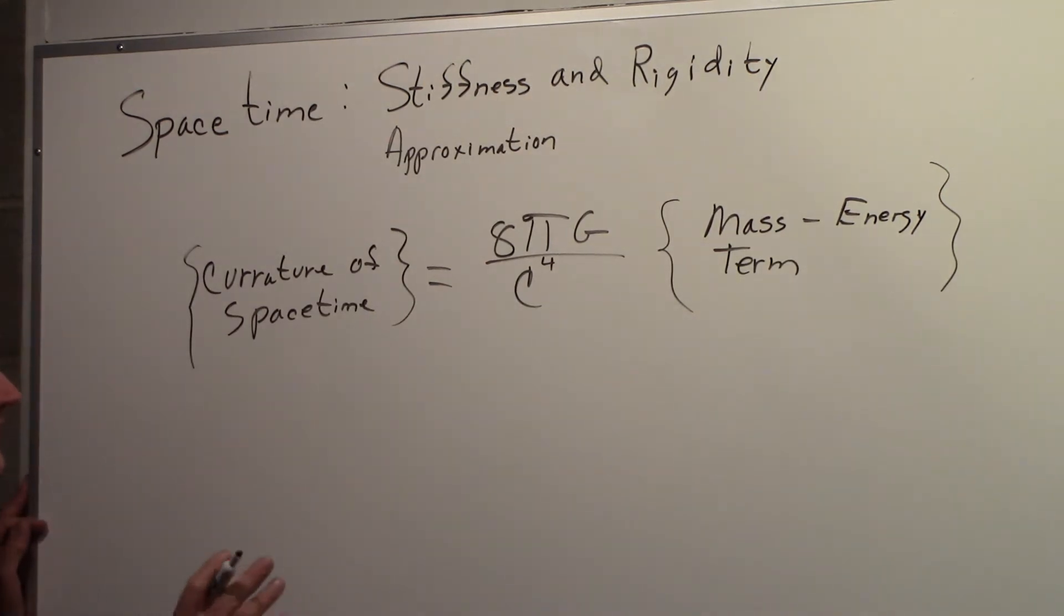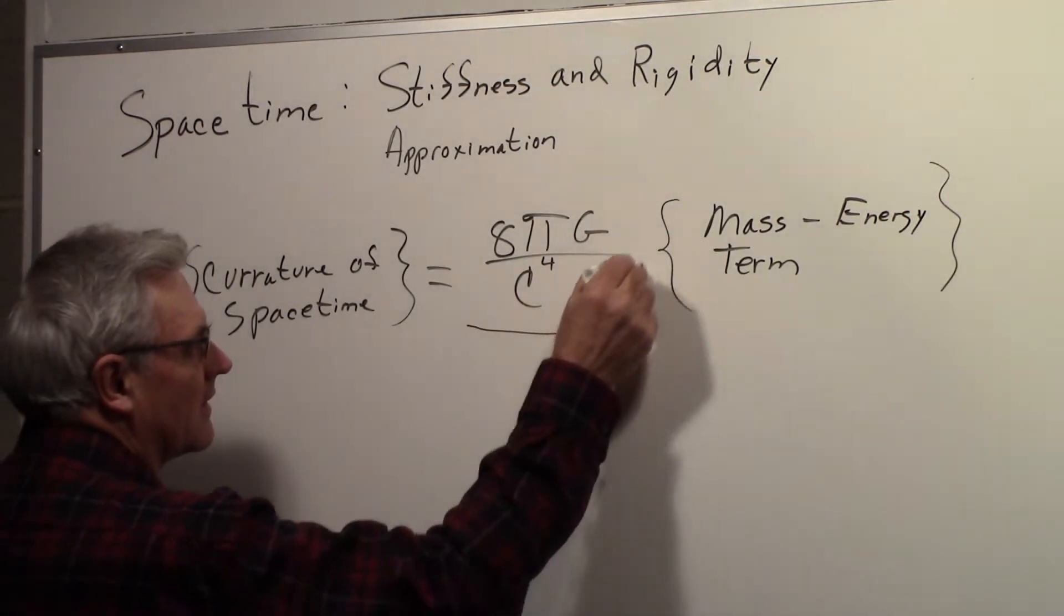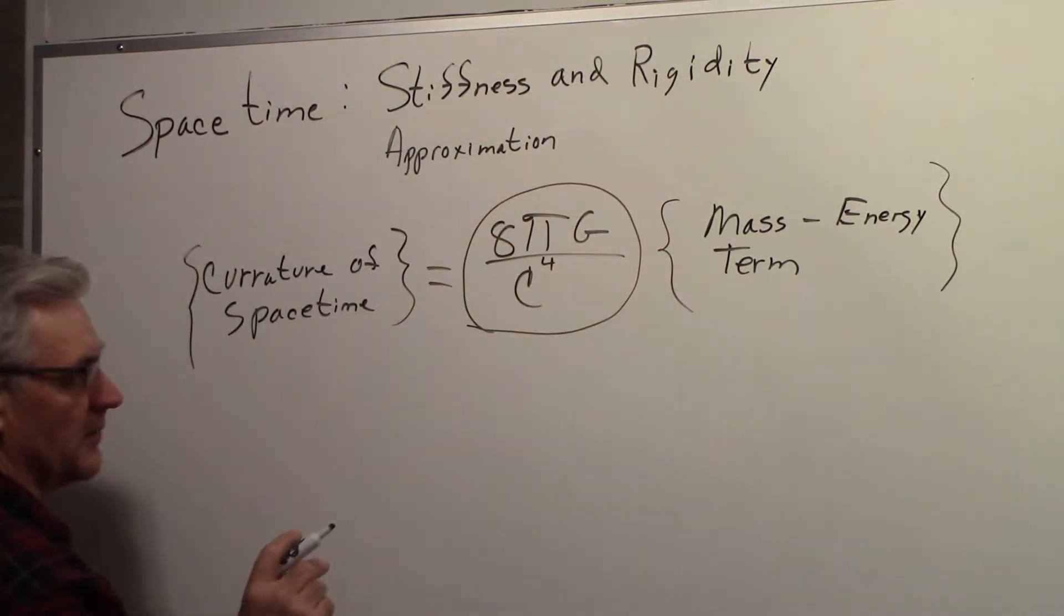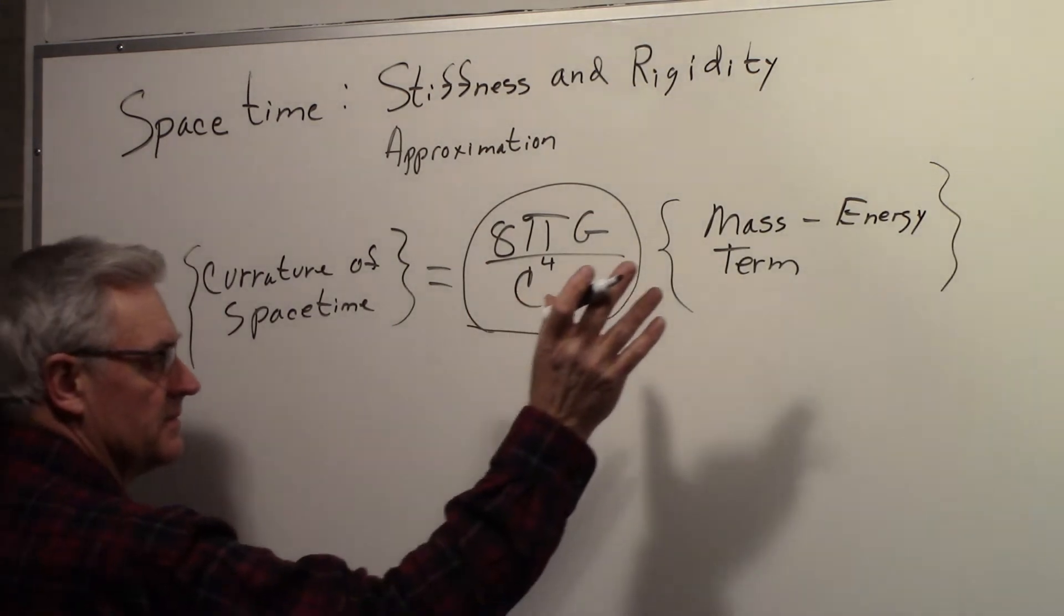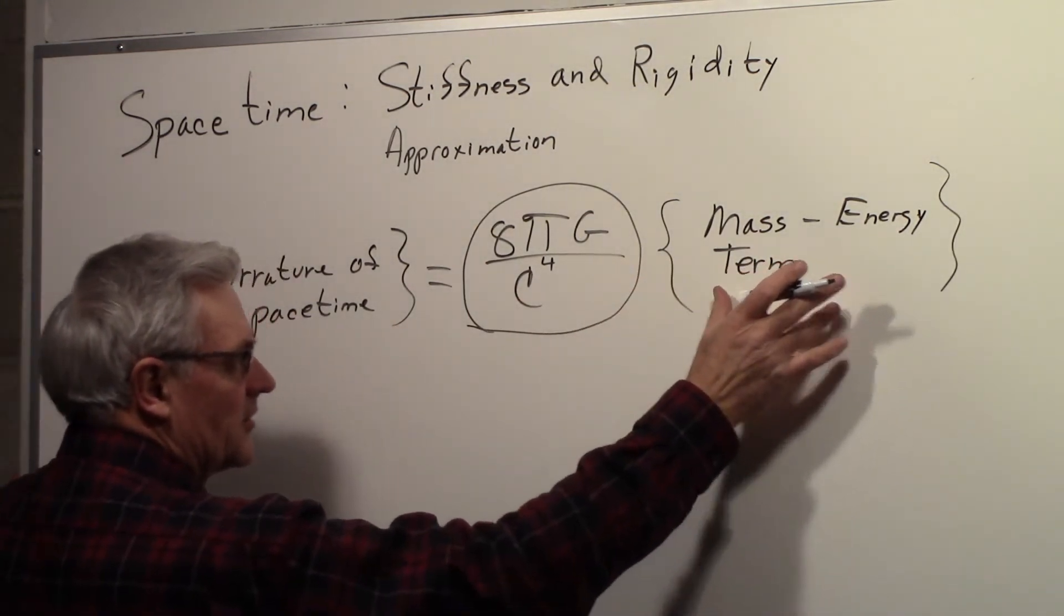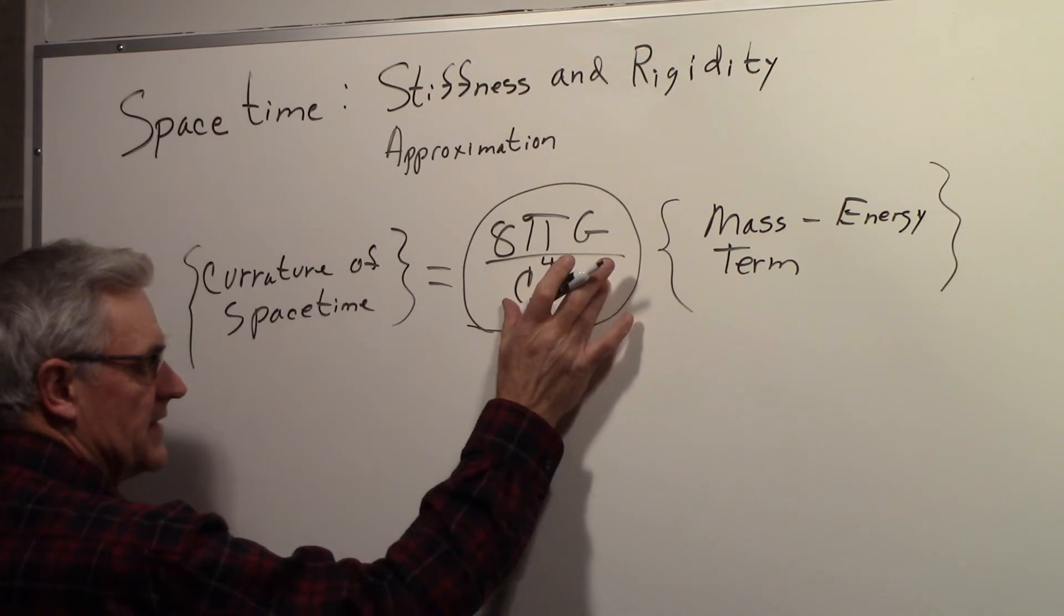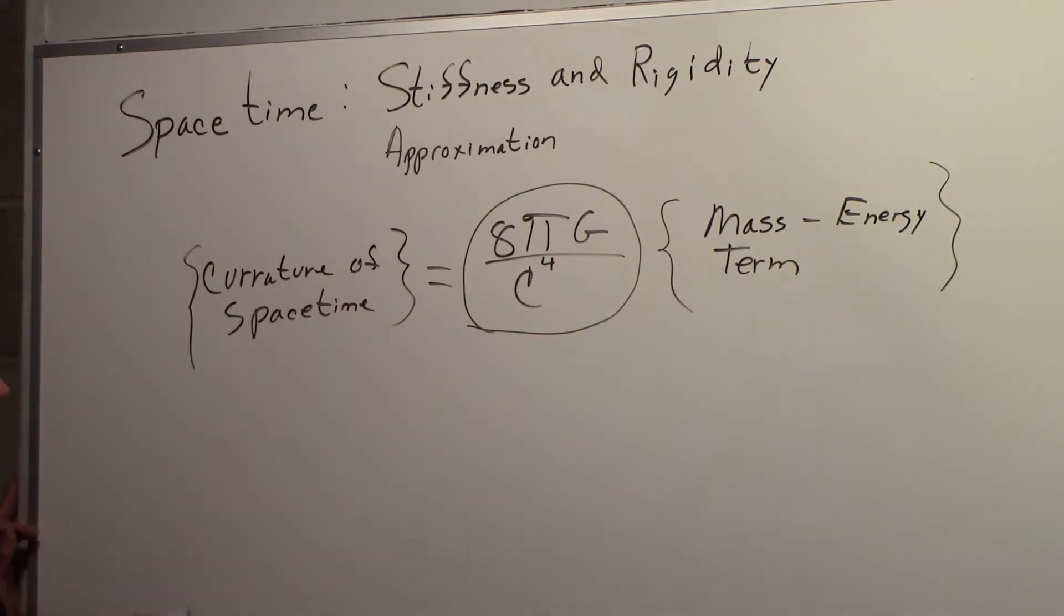So, in order to get an idea of how rigid or stiff space-time is, we want to take a look at this constant here, because what it's telling us is, this mass-energy term times this, is what will give curvature to space-time.